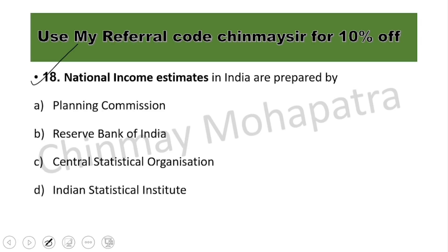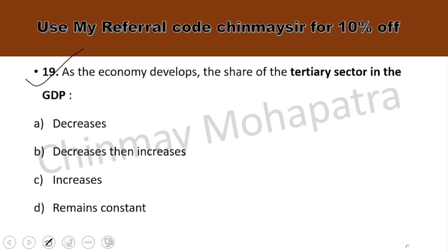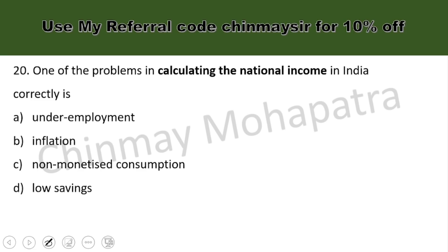Question number eighteen: national income estimates in India are prepared by the Central Statistical Organization — already discussed, repeated here. Question number nineteen: as the economy develops, the share of the tertiary sector in GDP increases — that is the right answer.